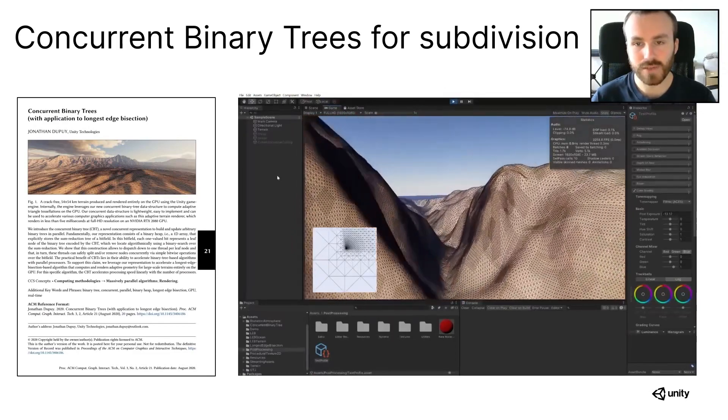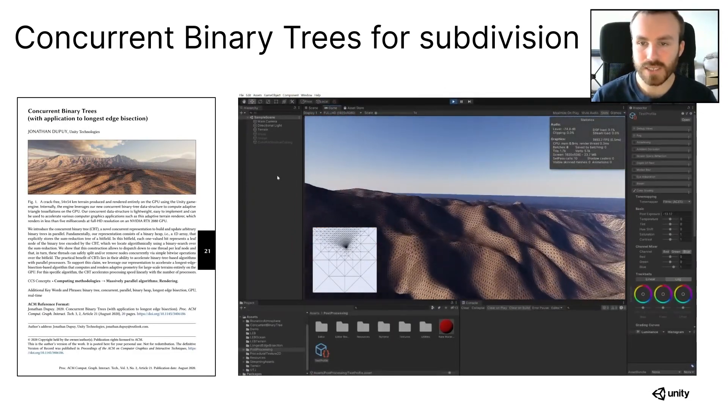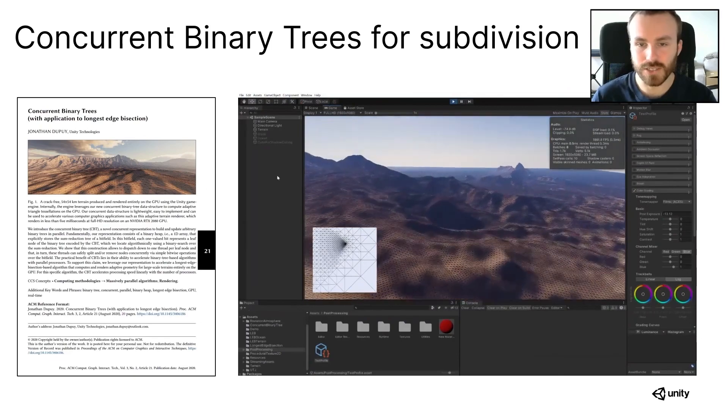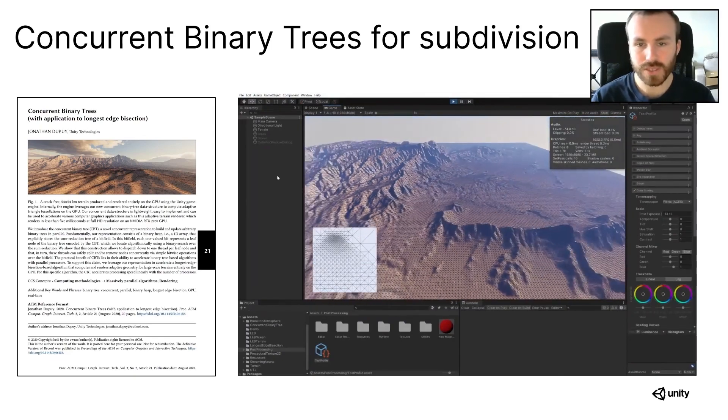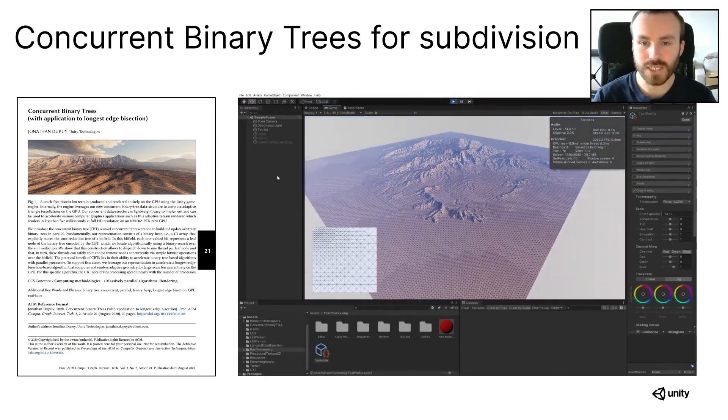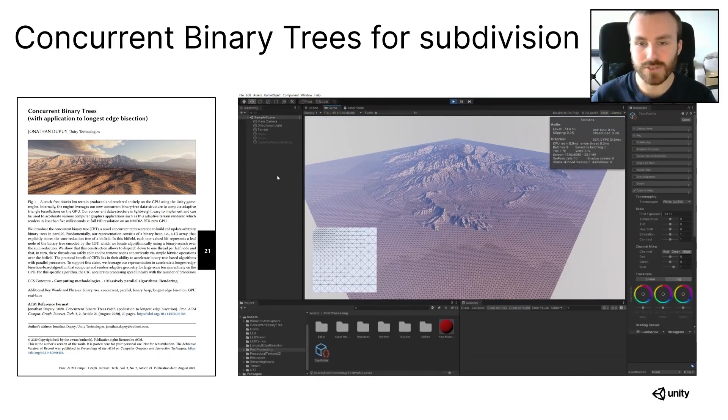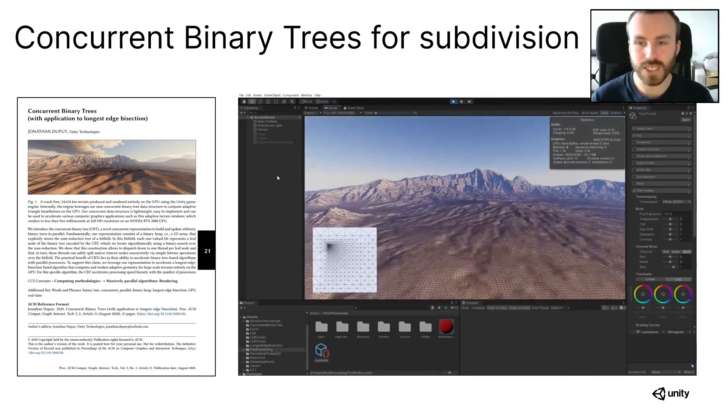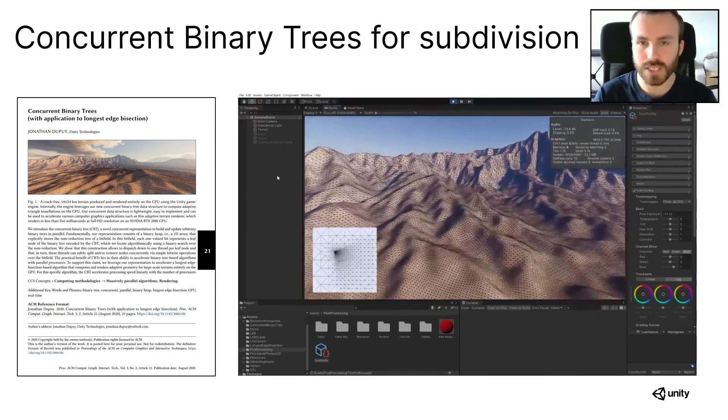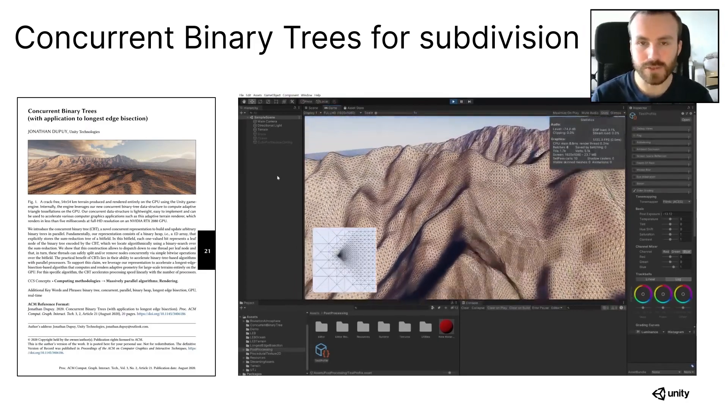Here on the right, you can see the video of the HPG paper, and you can see that it's the same geometry as that Shaolin just showed. An important thing to note is that we don't rely on tessellation shaders at all. Rather, this geometry is only generated with compute and vertex shaders using an algorithm called longest edge bisection, which I'm going to introduce first.